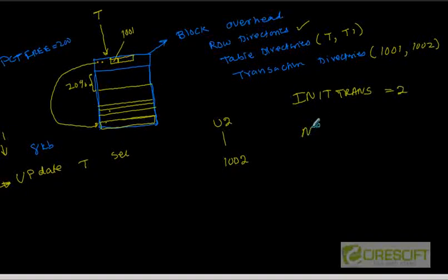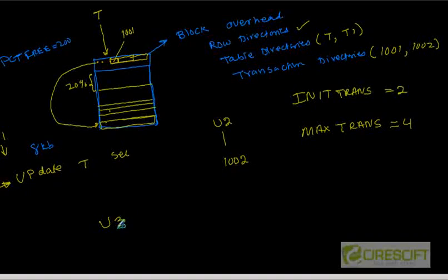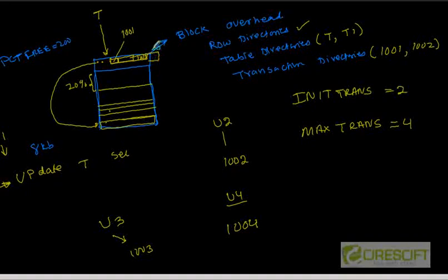Another parameter called MAX_TRANS — probably you must have guessed why we need MAX_TRANS. If MAX_TRANS is 4, then this array can grow up to a maximum of 4 transaction IDs. Let's say another user U2 is giving update table T and updating another row — that transaction ID is 1002, so the transaction directory will contain 1002. Then user U3 is doing an update to another row with transaction ID 1003, so it extends the array and stores 1003. Then user U4 updates another row with transaction ID 1004, so we now have 1004 in the array.